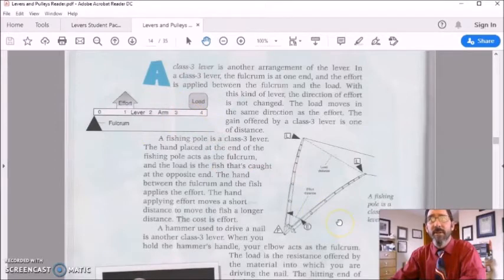Here's a good illustration of an example. A fishing pole is a class three lever. The hand placed at the end of the fishing pole acts as the fulcrum, and the load is the fish that's caught at the opposite end. The hand between the fulcrum and the fish applies the effort. The hand applying effort moves a short distance to move the fish a longer distance.